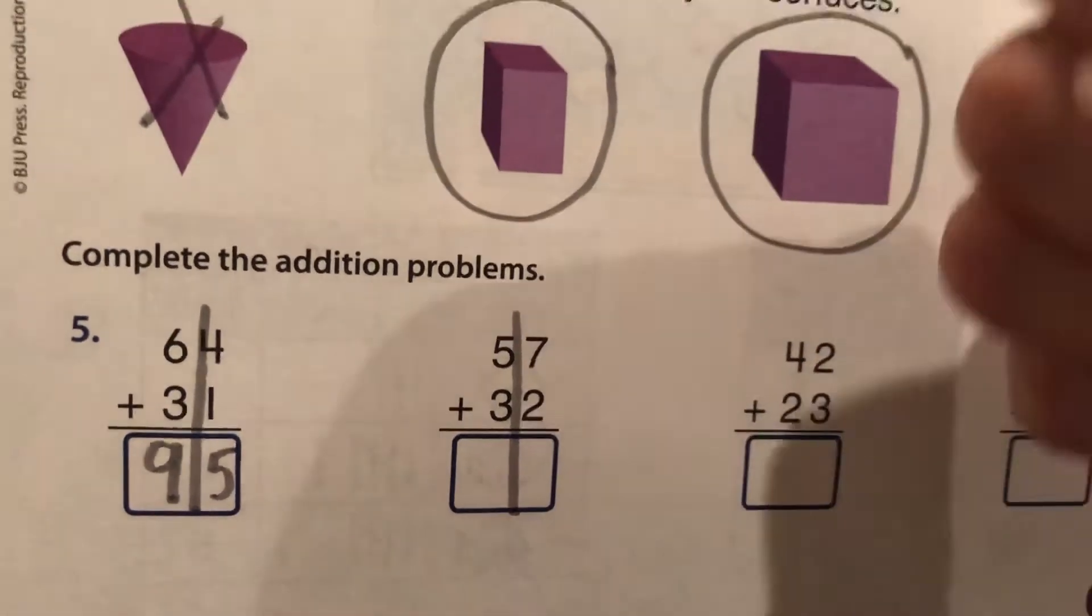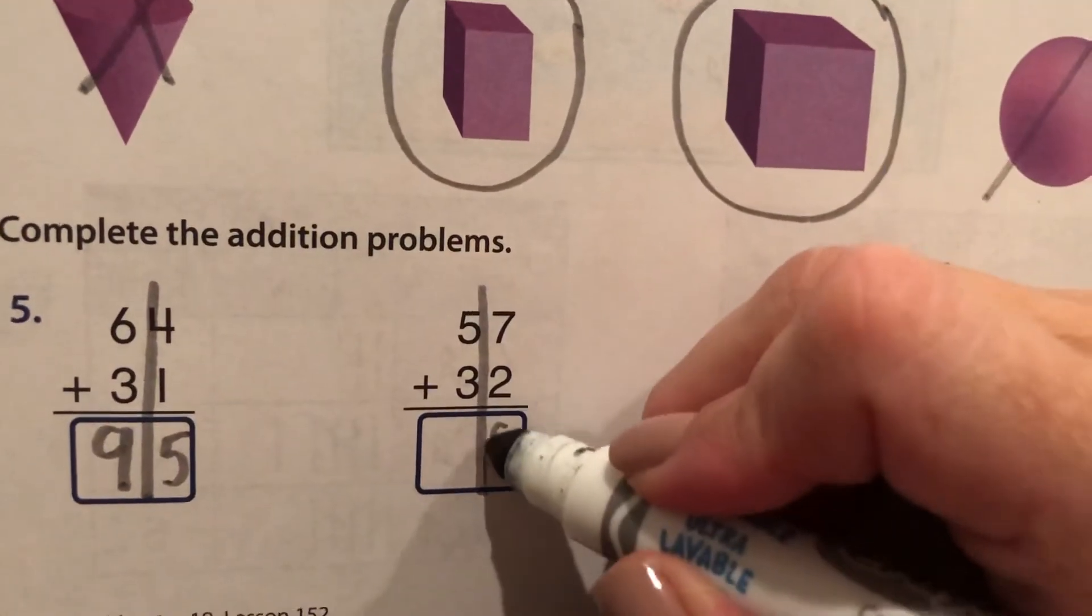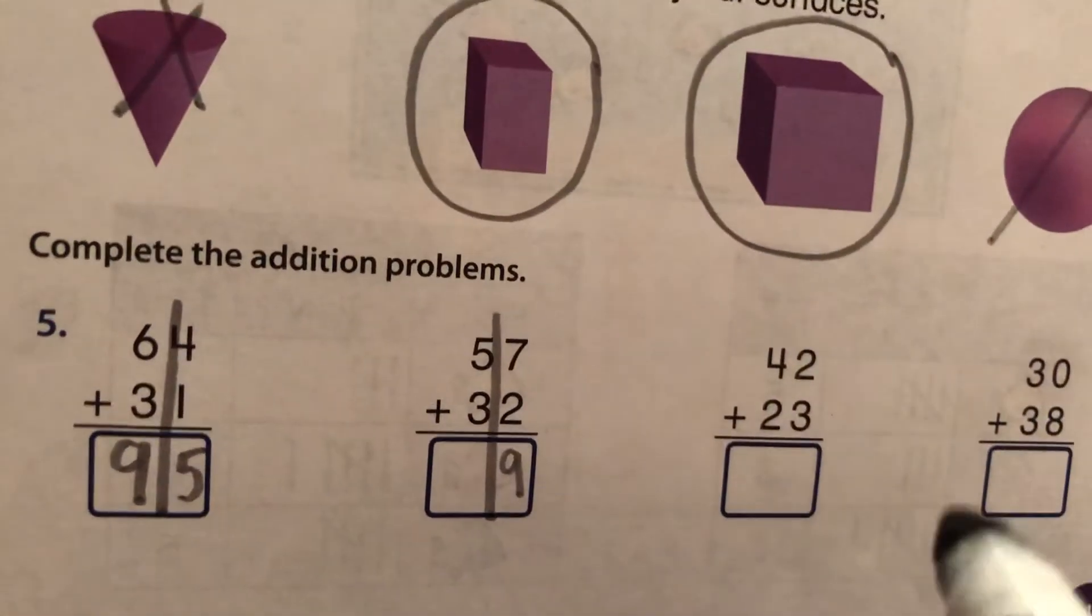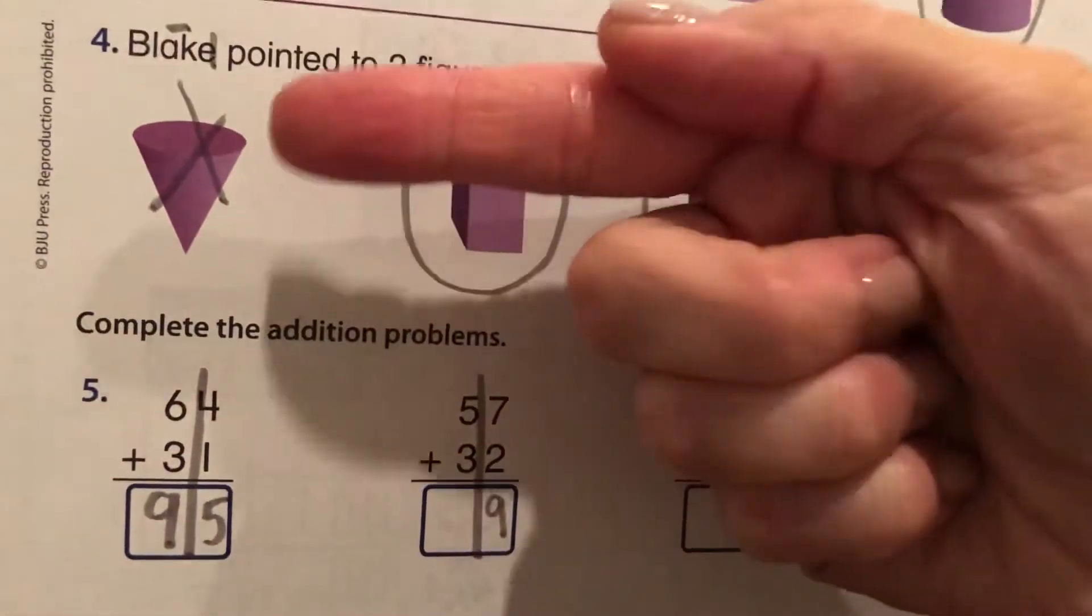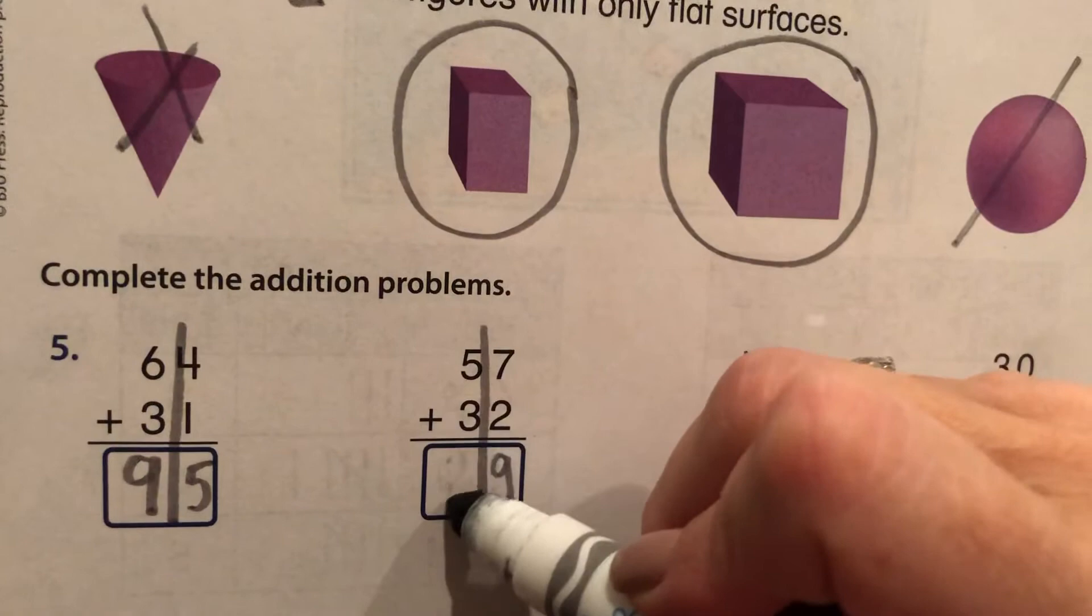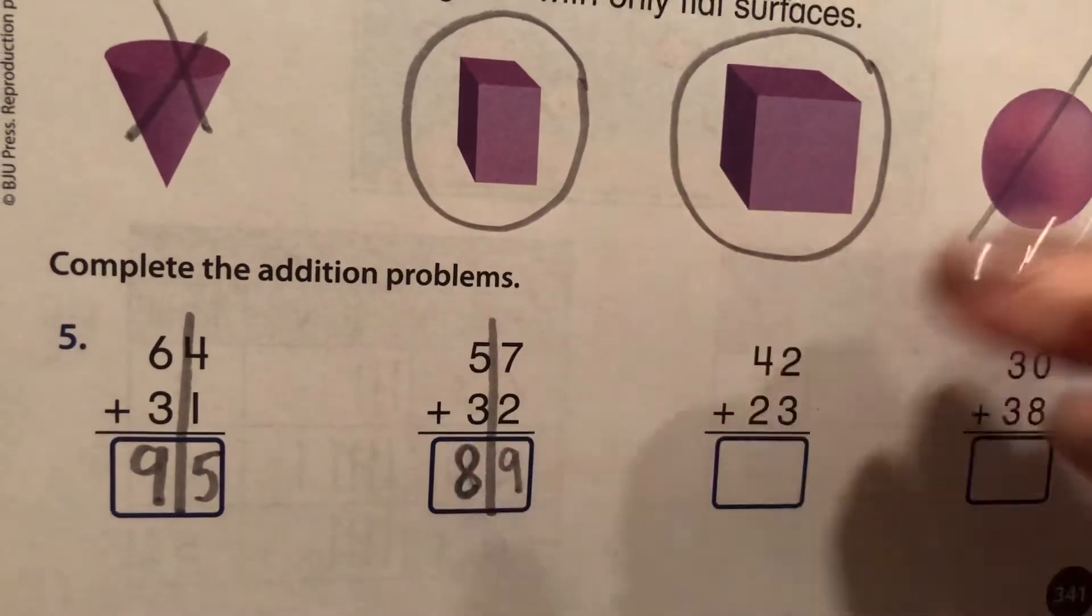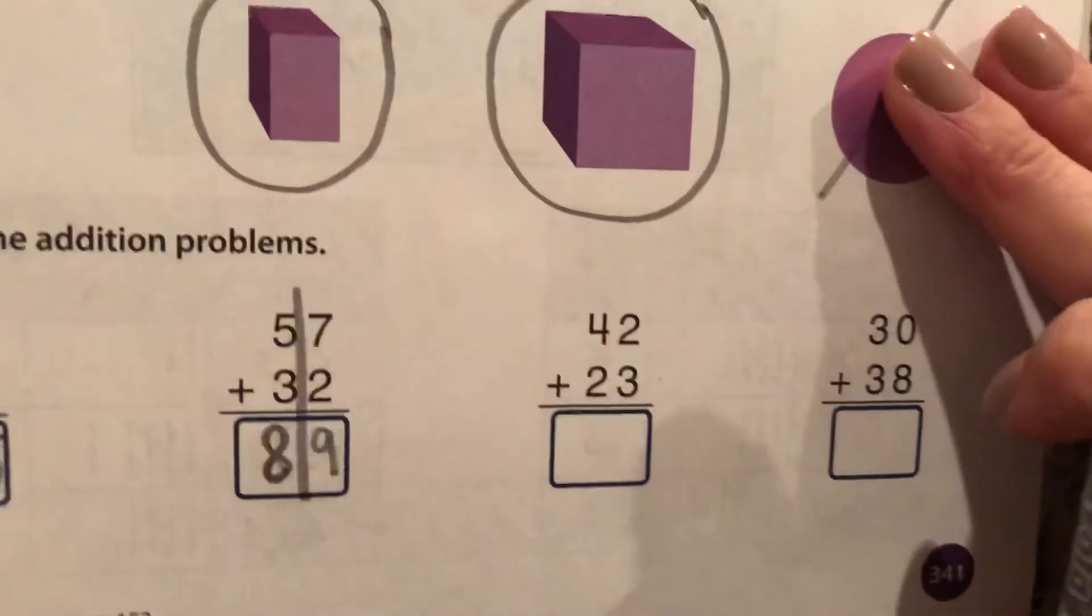Always do the ones first. Let's do this one. Seven, eight, nine. The answer is nine. Five, six, seven, eight. Eight. So 57 plus 32 equals 89.